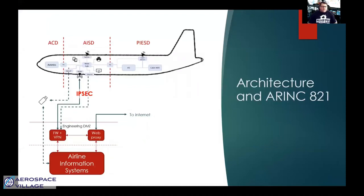Here is a simplified overview of an E-enabled aircraft. This diagram is based on compliance with the ARINC 821 protocol. As you can see, we have the three main domains: the aircraft control domain, the aircraft information system domain, and the passenger information and entertainment system. The AISD, as well as being a main communications hub, will host the electronic flight bag if it's a class two. If it's a class three, the EFB will sit in the avionics.